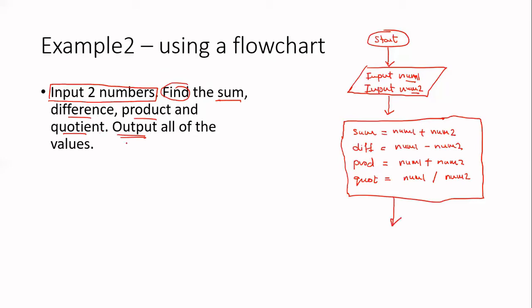Find the sum, difference, product and quotient. And then we need to output each of these values. So again output is a parallelogram. So we're going to say print. And you're going to have your messages. I'm just going to say sum is and let's print the sum. That's the placeholder. Print. Difference is. And the placeholder is diff.